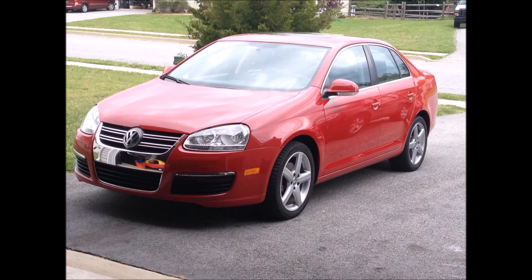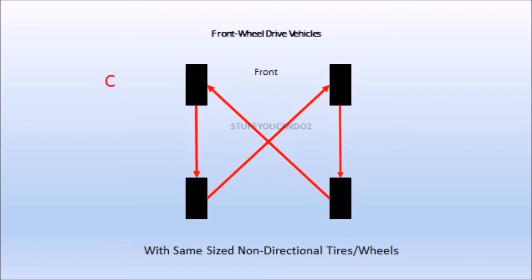Our next pattern applies to front wheel drive vehicles with non-directional tires and all tires being the same size such as this Volkswagen Jetta pictured here. As you can see, the front tires move straight back while the rear wheels cross as they move forward.